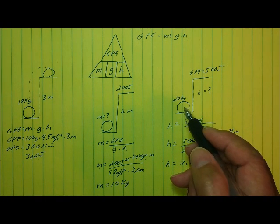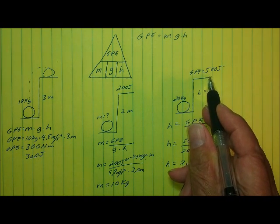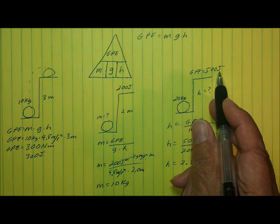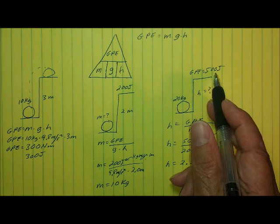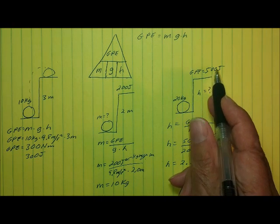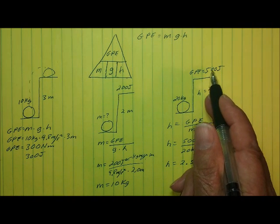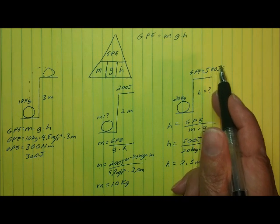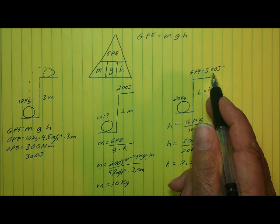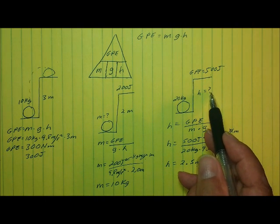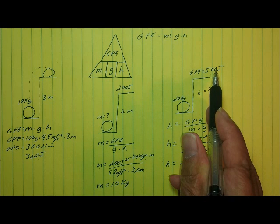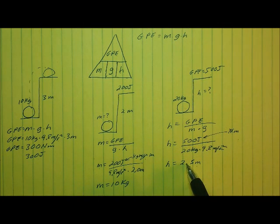So, if you pick this 20-kilogram object up and set it on top of the shelf, you do 500 joules of work on the object, storing 500 joules of gravitational potential energy. When the object is lifted, you give 500 joules of energy to the object, and that's why it's stored as gravitational potential energy. The height you would have to lift it to store that much energy is 2.5 meters. Those are three simple problems dealing with gravitational potential energy.